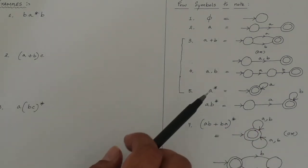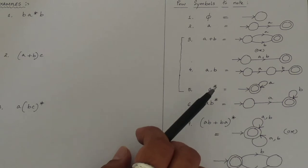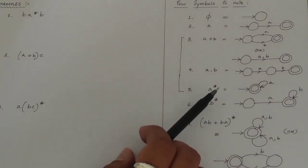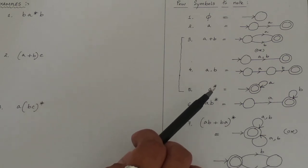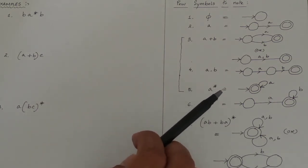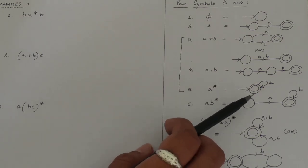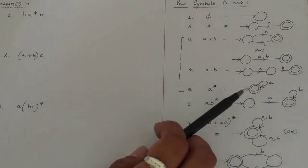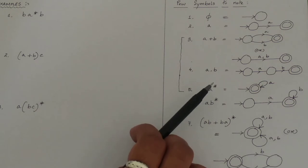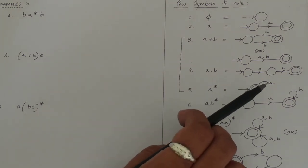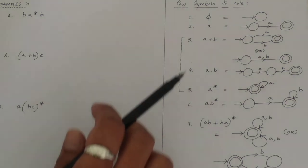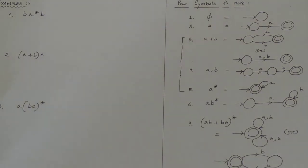Finally, a to the power star: since the star value can equal zero, the initial state will also be the final state — representing the empty/epsilon string. Apart from that, 'a' can have a self-loop. So I have taken one state where initial is final, plus a self-loop for 'a'. These three primitive expressions — union, concatenation, and Kleene star — you must keep in mind, as they will be used repeatedly in examples.